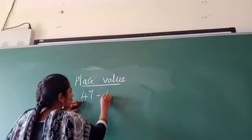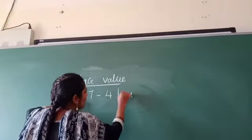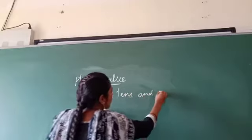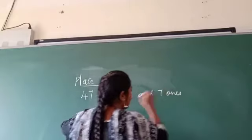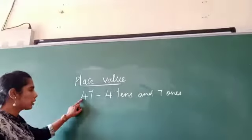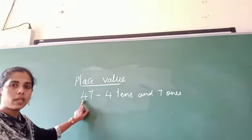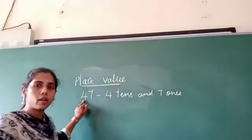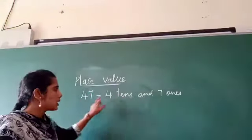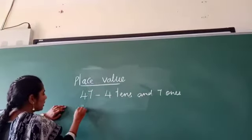In this, you have to say that four tens and seven ones. Four tens, seven ones. How many tens? Four tens. Four hundreds of tens and seven ones. Like thirty.